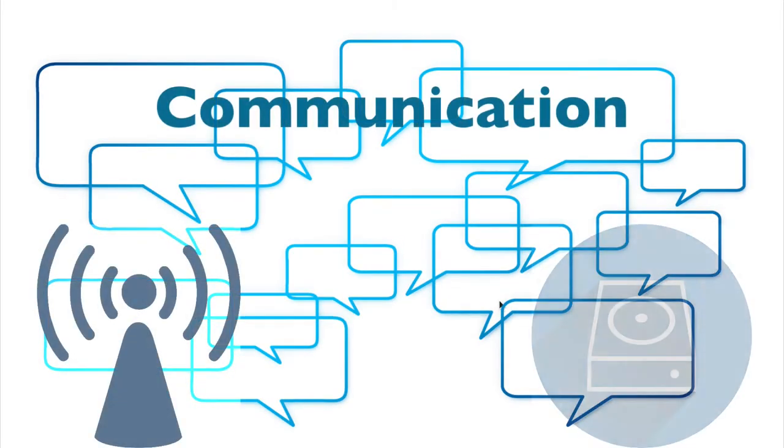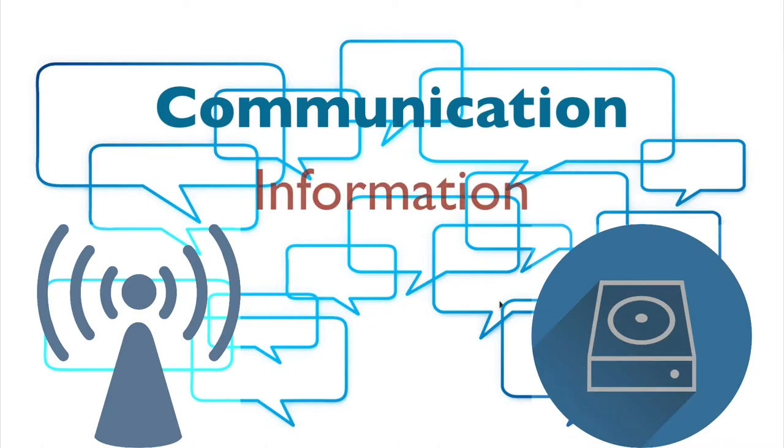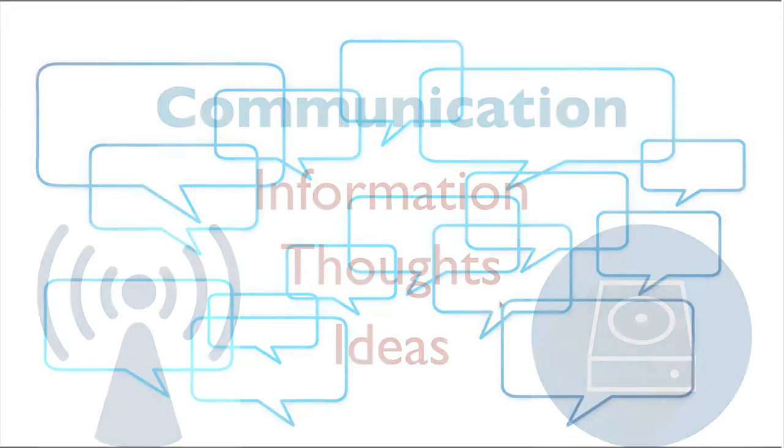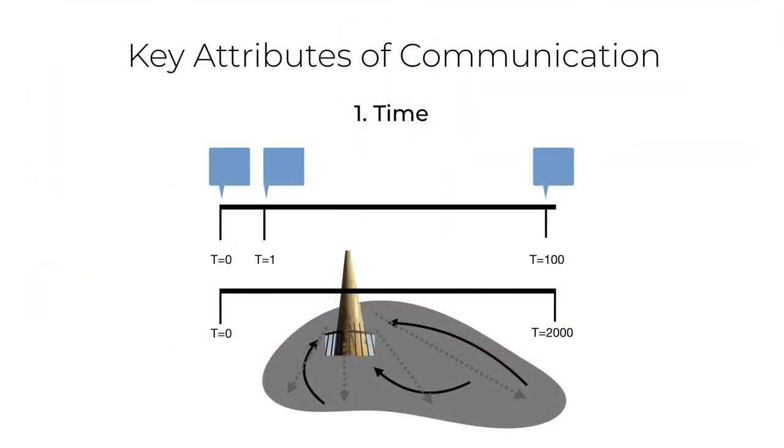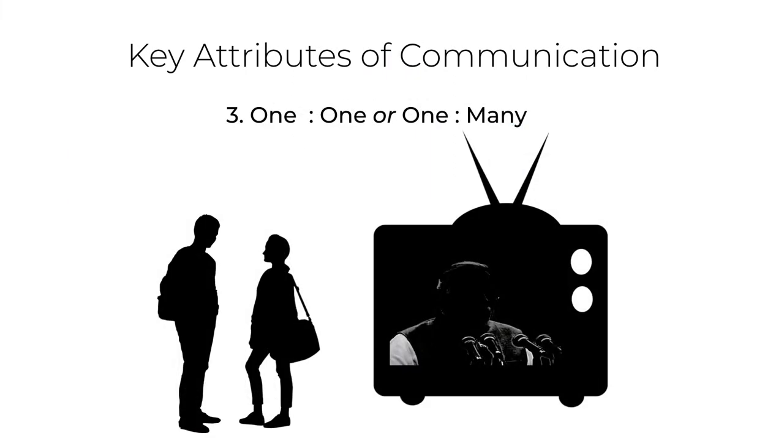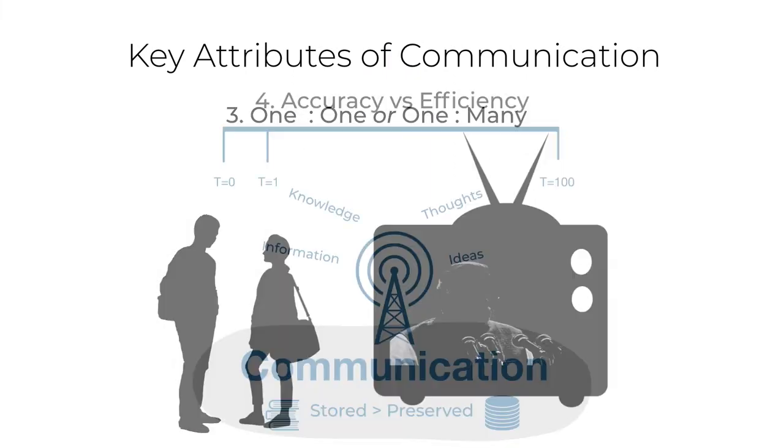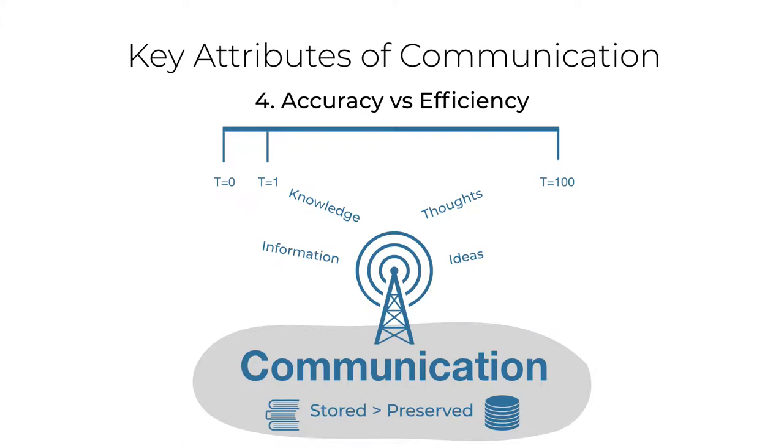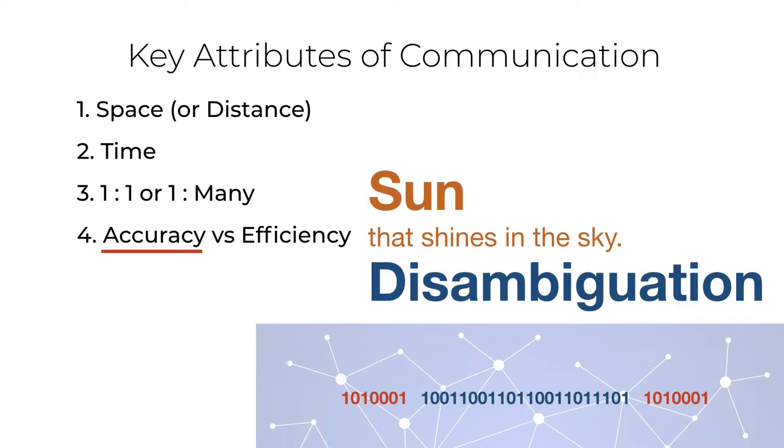In the last video we discussed that communication is the transmission, storage, and preservation of information, ideas, and thoughts. We looked at attributes of communication like time, space or distance, one-to-one and one-to-many communication, and accuracy versus efficiency of information where we discussed the idea of disambiguation—that is, dissemination of information without misinterpretation.